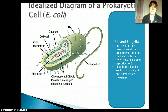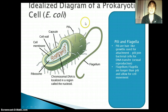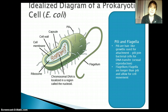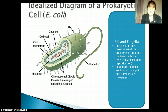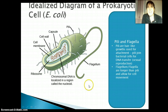Next are the pili and the flagella. They're fairly similar structures but have very different roles. Pili are little hair-like projections — they're not used for movement, they're used for bacterial conjugation. They allow bacteria to hook onto each other and exchange little bits of DNA. Flagella, sometimes cilia, are for cell movement.